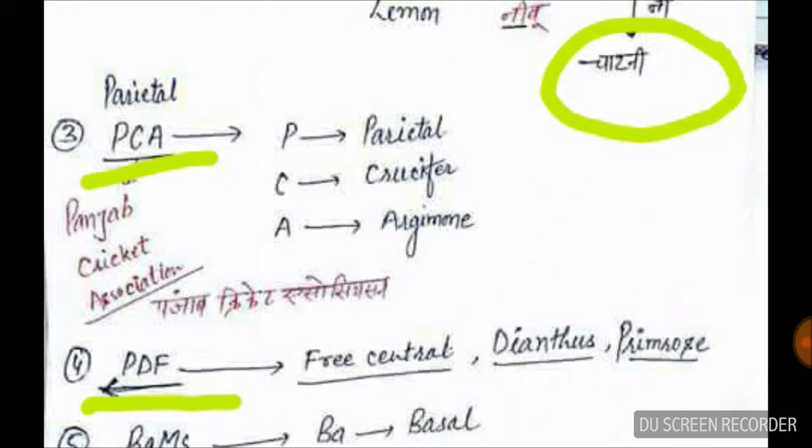The mnemonic for parietal is PCA — P for parietal, C for crucifer, A for agrimone. You can relate PCA with Punjab Cricket Association to remember it easily.